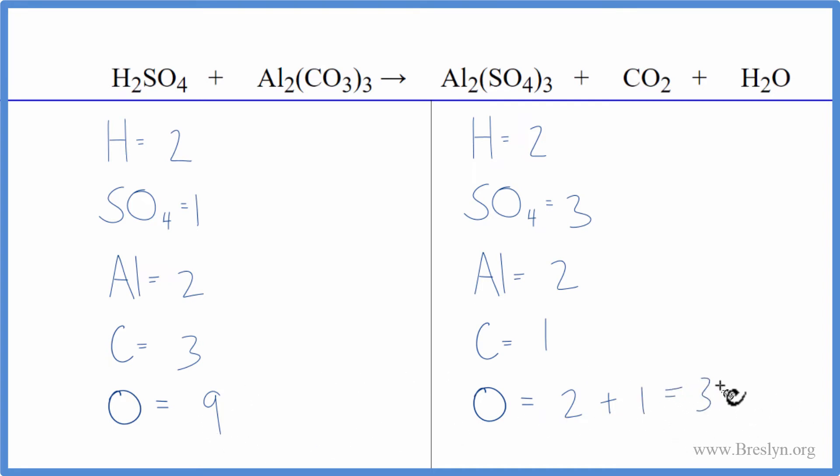I like to leave the oxygens till last. Let's fix the carbons. If I put a coefficient of three in front of the CO2, one times three, that'll give me three carbons. Those are balanced. Let's update the oxygens. So I have two times three, that's six, plus the one in the water. That gives me seven.